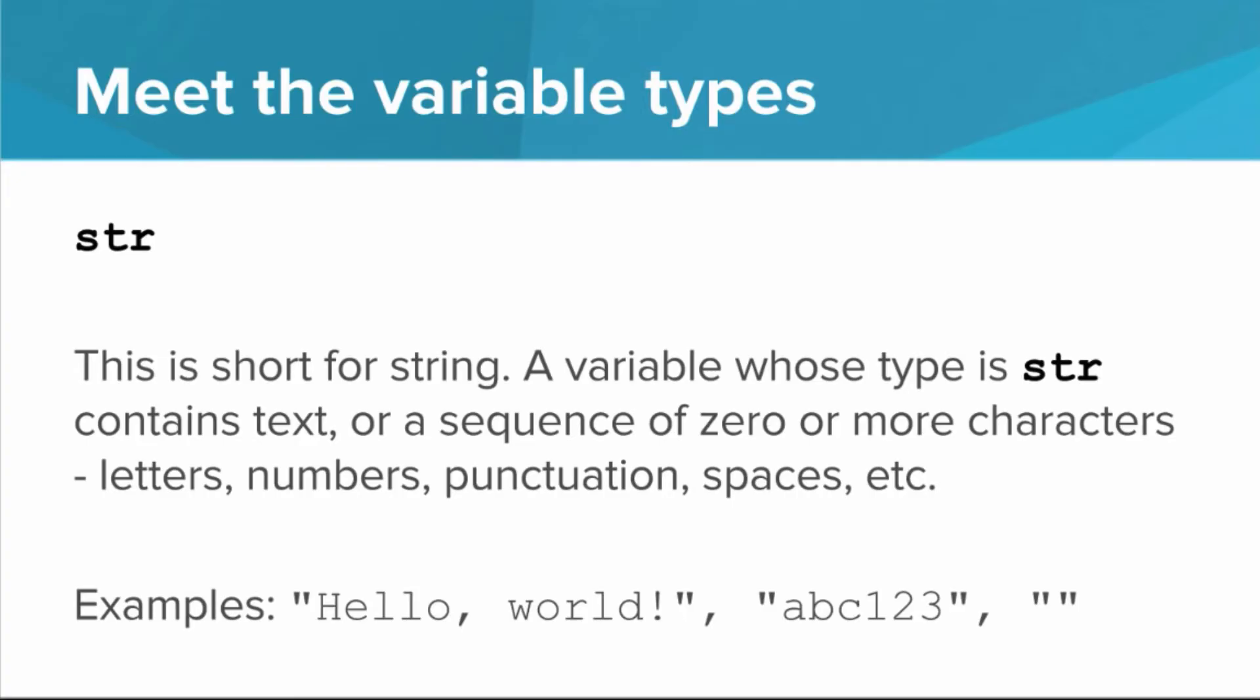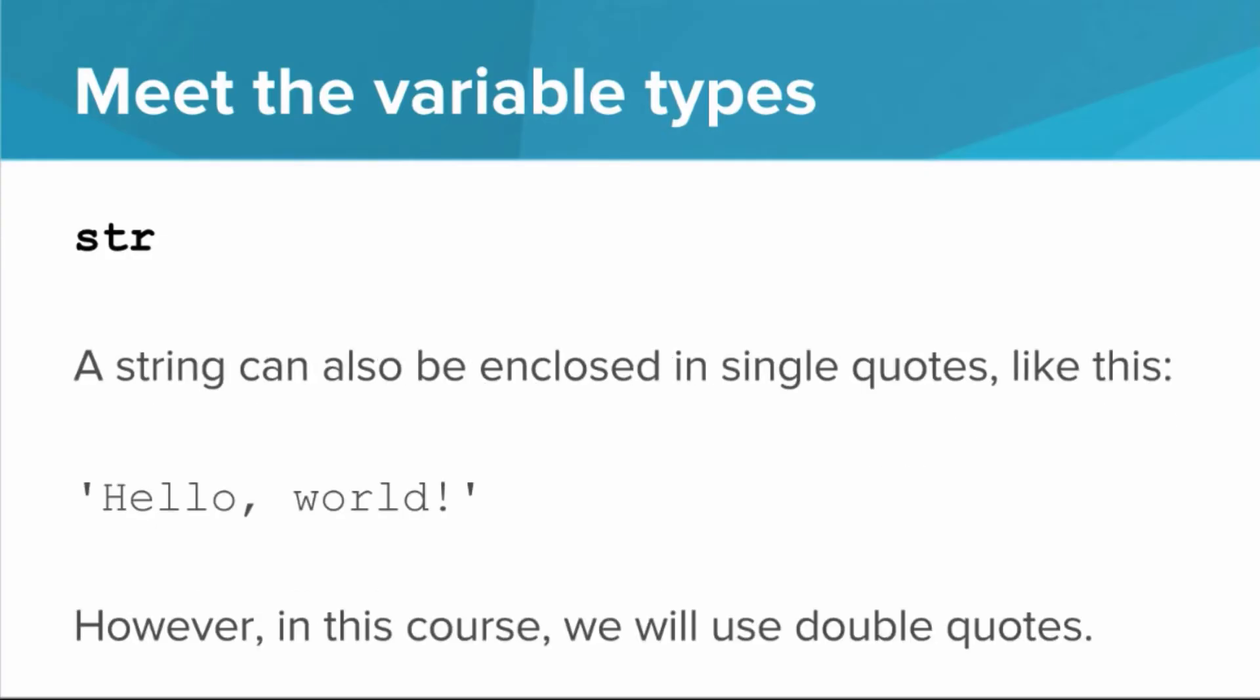So hello world is an example, abc123 is an example, or a string can actually have zero characters. Okay, quick digression: strings can also be surrounded by single quotes in Python. However, in this course, we will use double quotes.